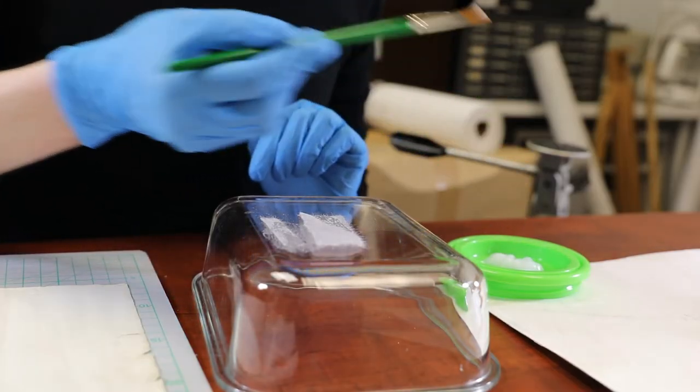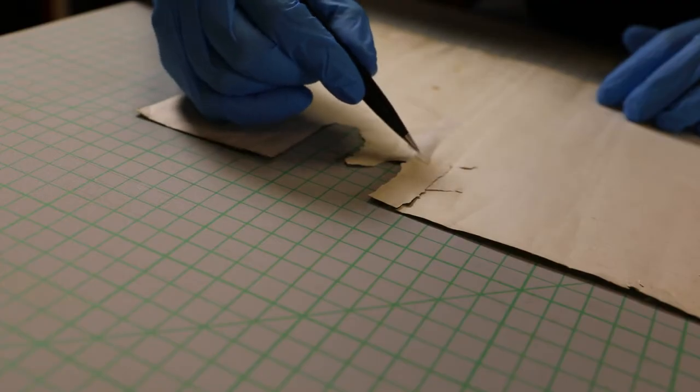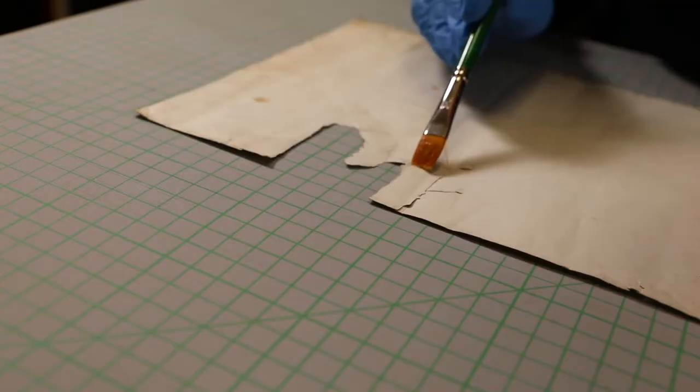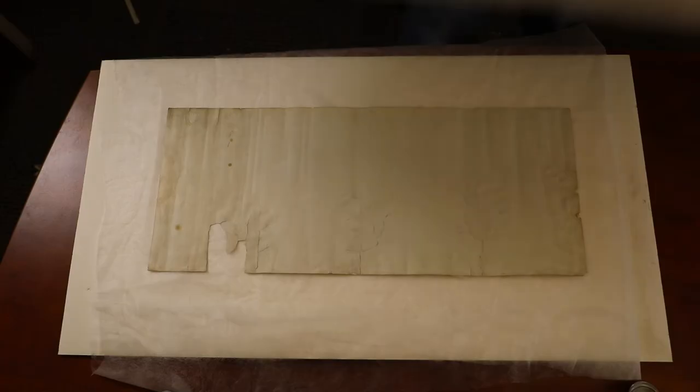Then we take the strips, wet them with a small amount of glue, and gently brush them on over the tears. Now that we've repaired as much as we can, we need to dry it under weight to avoid the paper buckling or waving as it dries.